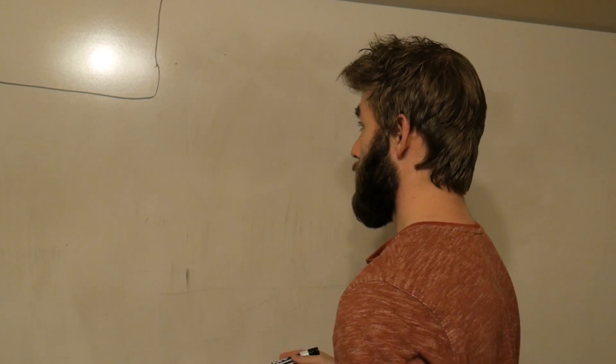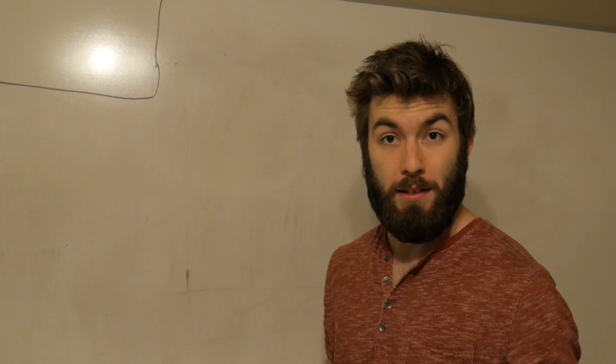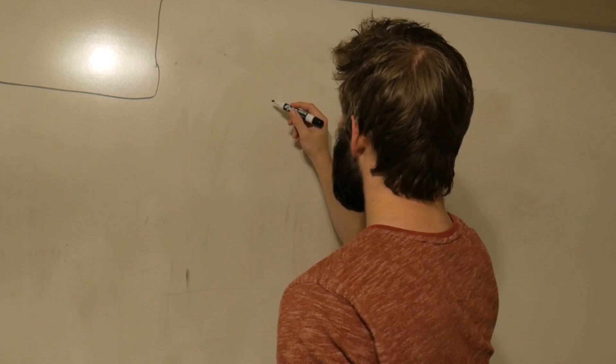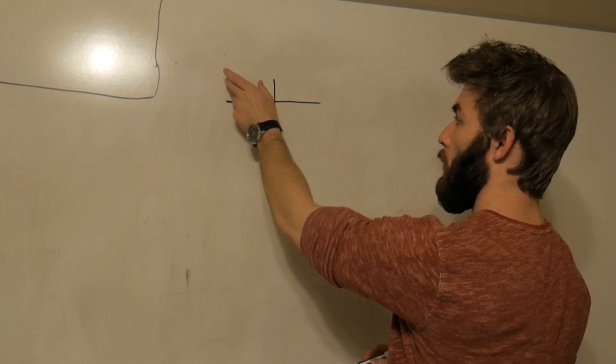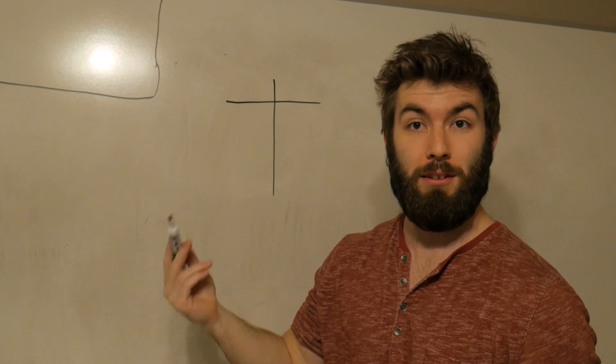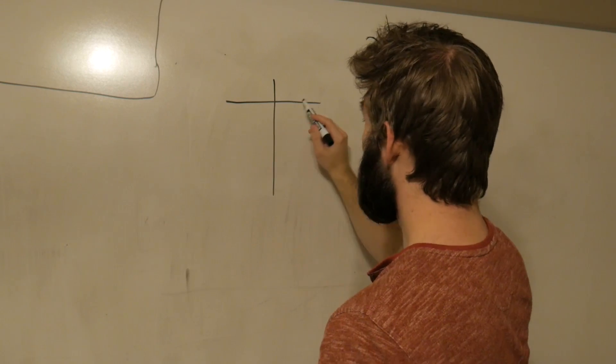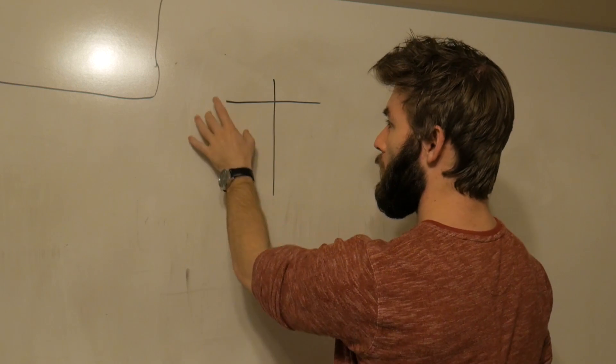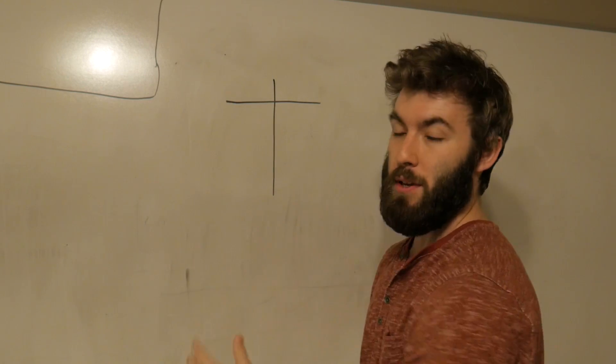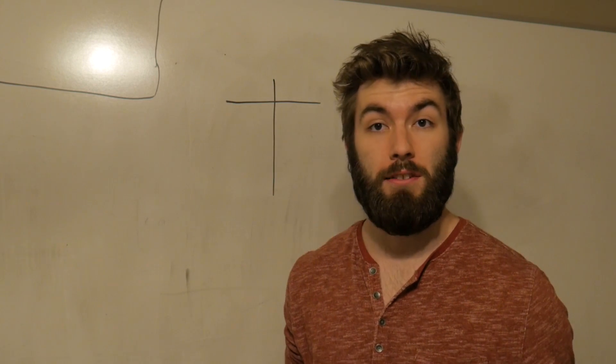And the way to set up the tabular integration is we're going to—wait, ready for this?—we're going to set up a table. Go figure. And the table's going to have two columns. The left column is always going to be the term that we're continuously differentiating. And the right column is going to correspond to the term that we're going to be integrating.